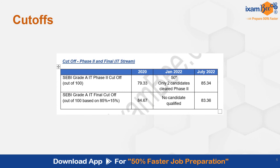Looking at past year cutoffs: in 2020, the phase 2 cutoff was 79.33 and the final cutoff was 84.67. In January 2022, only 2 students cleared phase 2 despite there being around 11 or 16 vacancies, so no candidate ultimately qualified. Therefore, SEBI IT specialist recruitment was held again in July 2022, when the phase 2 cutoff was 85.34 and the overall cutoff was 83.36. Refer to these cutoffs.